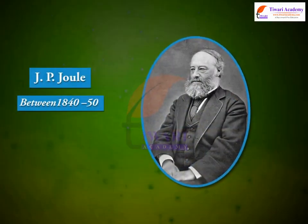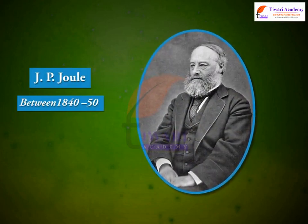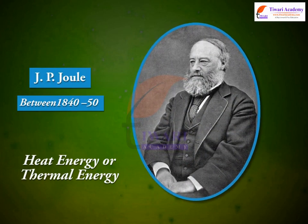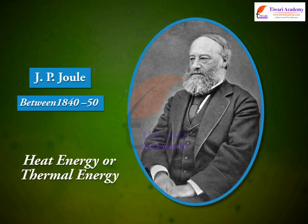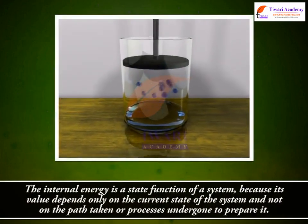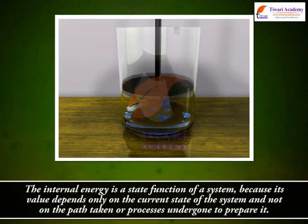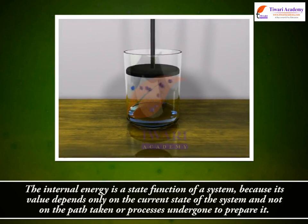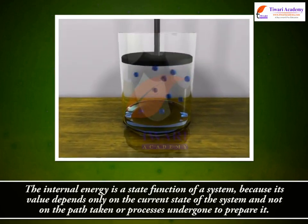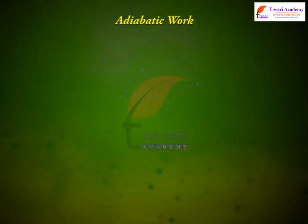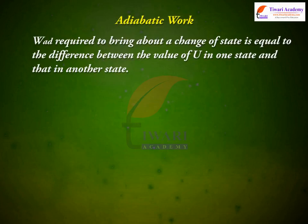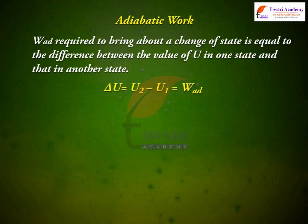J.P. Joule, between 1840 to 1850, showed that the amount of heat energy or thermal energy created is proportional to the work done. The internal energy is a state function of a system because its value depends only on the current state of the system and not on the path taken or processes undergone to prepare it. The adiabatic work W_ad required to bring about a change of state is equal to the difference between the value of U in one state and that in another state: delta U equals U2 minus U1, which equals W_ad.